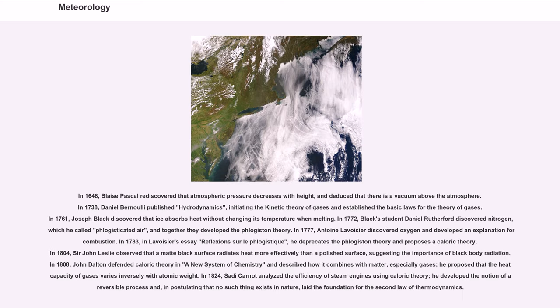In 1648, Blaise Pascal rediscovered that atmospheric pressure decreases with height. In 1738, Daniel Bernoulli published Hydrodynamica, initiating the kinetic theory of gases. In 1761, Joseph Black discovered that ice absorbs heat without changing its temperature when melting. In 1777, Antoine Lavoisier discovered oxygen and developed an explanation for combustion. In 1783, in Lavoisier's essay Réflexions sur le Phlogistique, he deprecates the phlogiston theory and proposes a caloric theory.